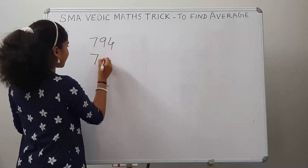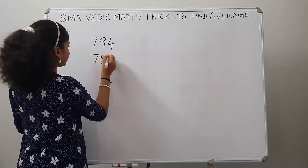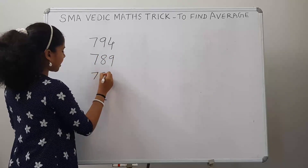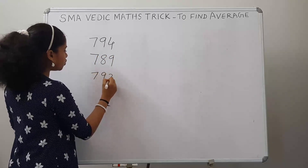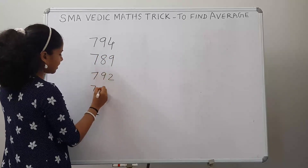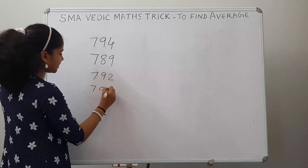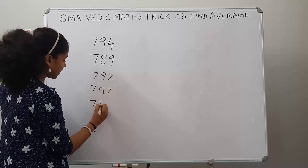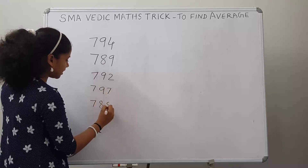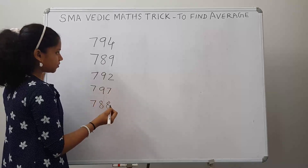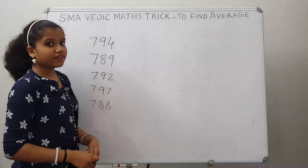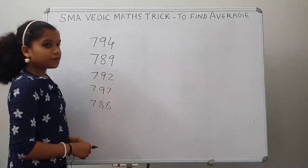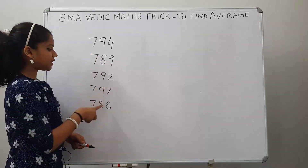The marks of the top 5 students are: 794, 789, 792, 797, and 788. Now, if we are doing this with the normal method, first we have to find the sum of these numbers and then divide by the number of terms.